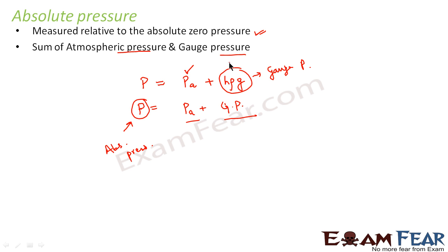The three different categories of pressure are: atmospheric pressure, gauge pressure, and absolute pressure. Absolute pressure is always measured relative to absolute zero pressure — very similar to how we measure potential energy, where we consider a zero of potential. Similarly, when we talk of absolute pressure, we are measuring it relative to some absolute zero pressure. These are the three terms you should be very clear on so that there is no confusion going ahead.